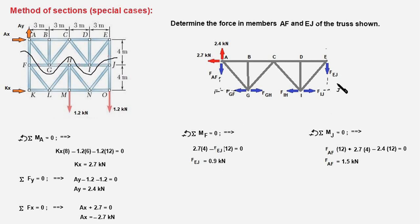And next we take moment of all these forces about point J. So this force as well as these four forces will have 0 moment, so we'll write this equation and this equation will give F AF equal to 1.5 kilonewtons. So these are the two forces in these two members and we are done.